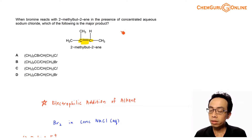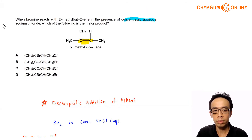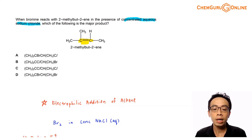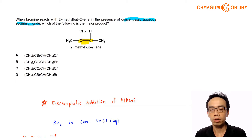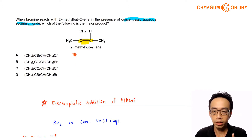So it is a bit interesting when we are given concentrated aqueous sodium chloride, which we have this year. It is something unusual, so therefore we have to do application in terms of understanding the mechanism — electrophilic addition of the alkene — to try to determine which is the most likely major product.